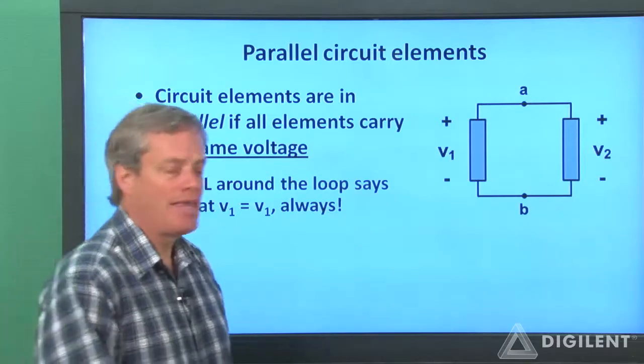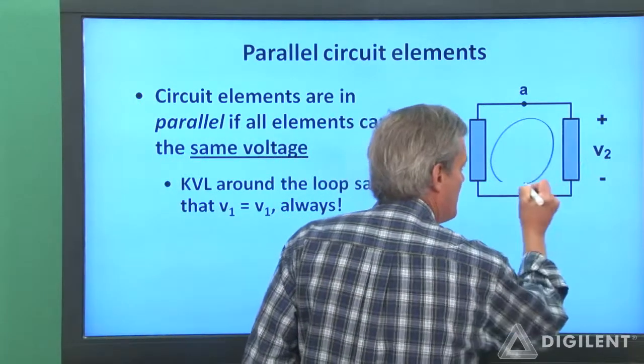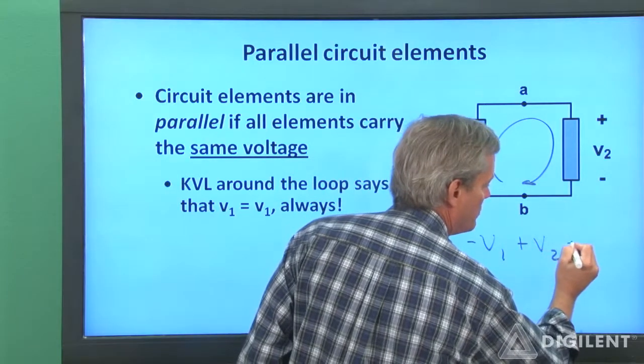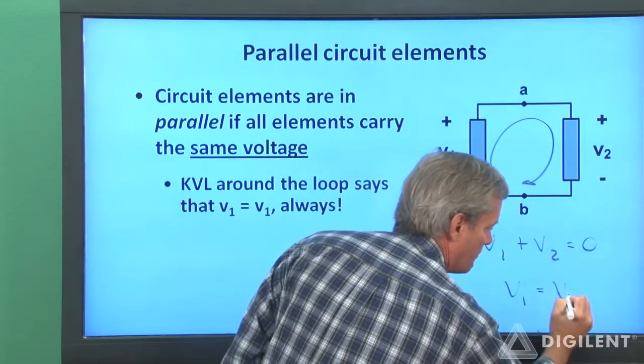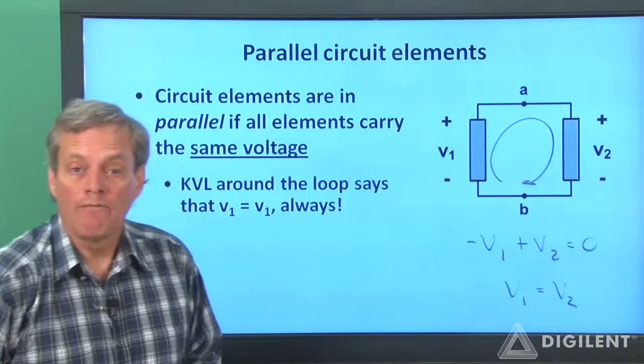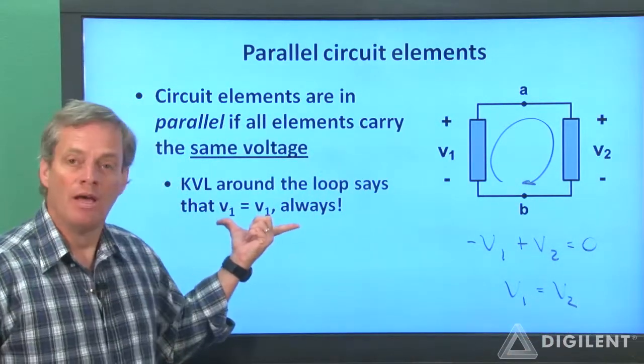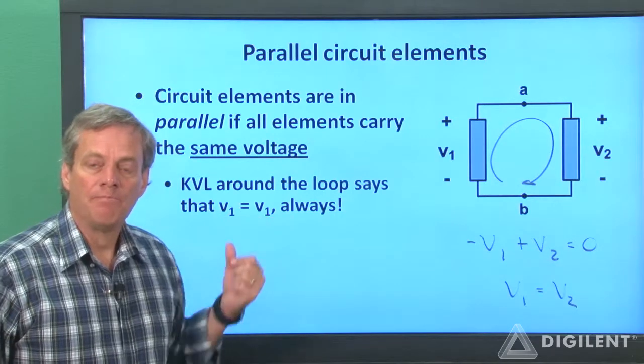Now if we apply KVL around this loop, we'll see that minus V1 plus V2 is equal to zero or V1 is equal to V2. There's no qualification to that statement. These two are always the same and the elements are in parallel.